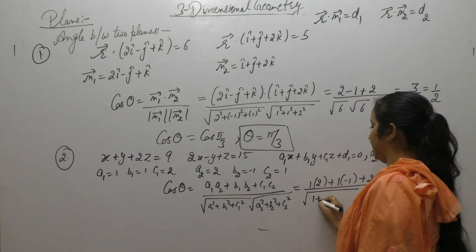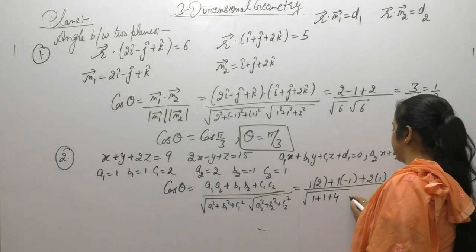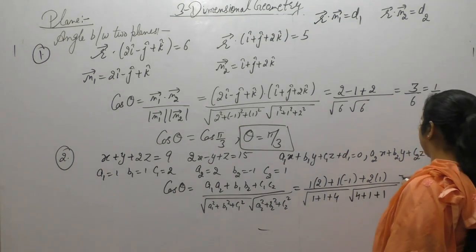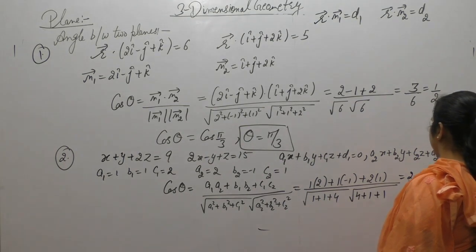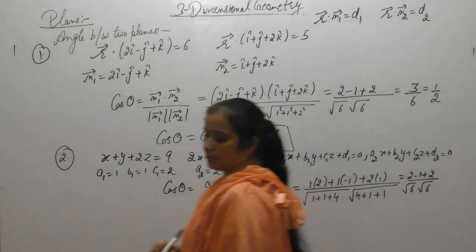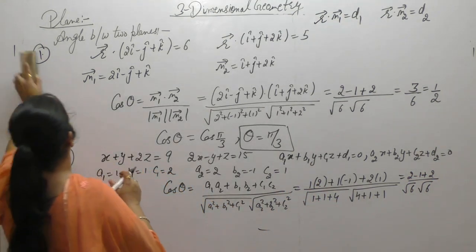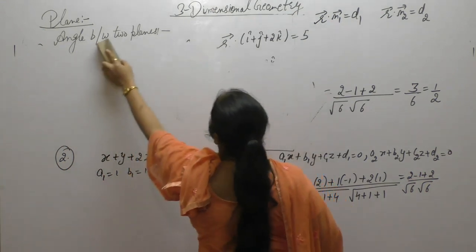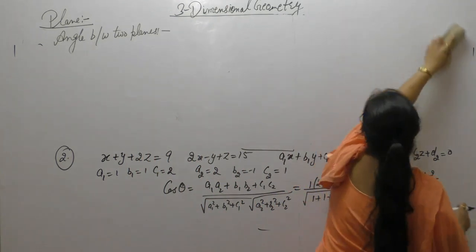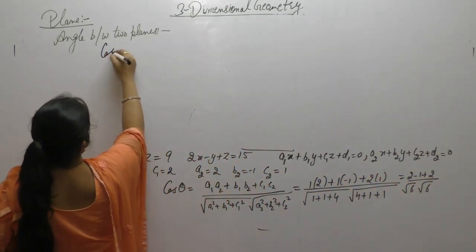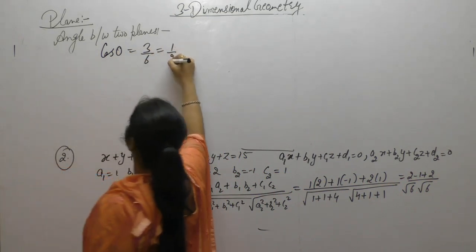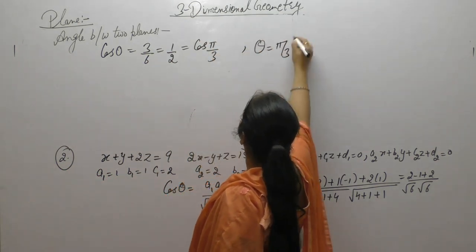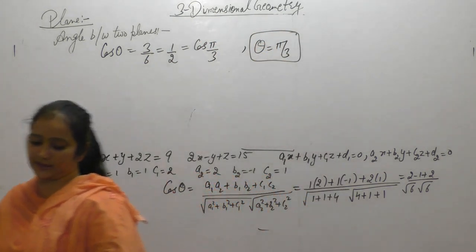Substituting the values: numerator is 2 minus 1 plus 2 equals 3. Denominator is square root of (1 plus 1 plus 4) into square root of (4 plus 1 plus 1) equals root 6 into root 6 equals 6. So cos theta equals 3 by 6 equals 1 by 2, which is cos(pi/3), so theta equals pi by 3.